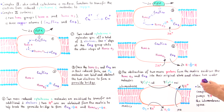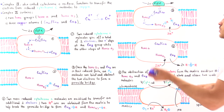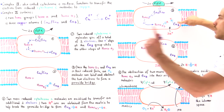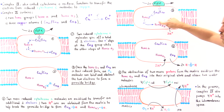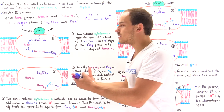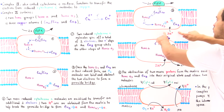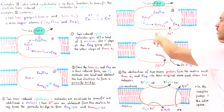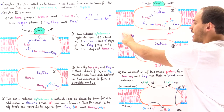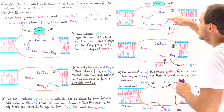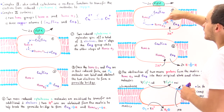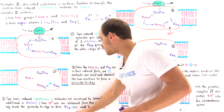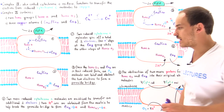Before two protons are used to break the peroxide bridge, two more reduced cytochrome C molecules are oxidized by Complex 4, releasing two electrons. One electron ends up on copper B and the other ends up on heme A3. When those two electrons are abstracted, two protons are simultaneously picked up from the matrix of the mitochondria by Complex 4, allowing the bridge between the two oxygen atoms to be broken.